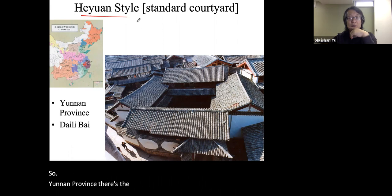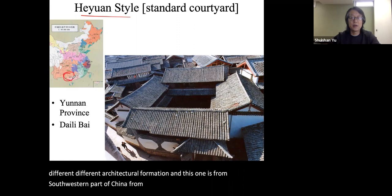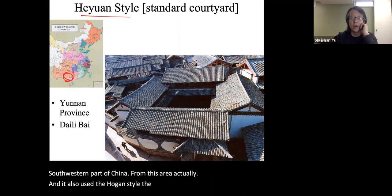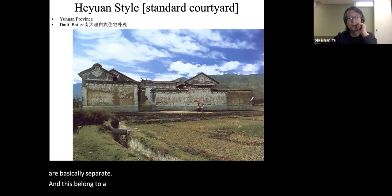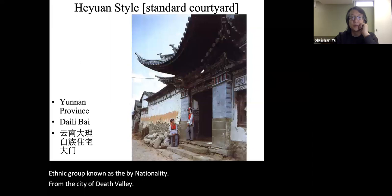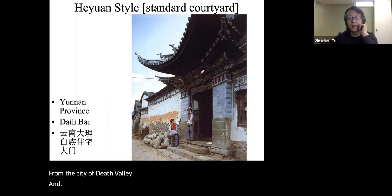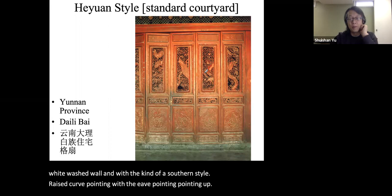In Yunnan province, the same courtyard-style house can have very different architectural formation. This example from southwestern China uses the He Yuan style where buildings are essentially separate. It belongs to an ethnic group known as the Bai nationality, from the city of Dali. The characteristic feature of Bai ethnic architecture is white — they use whitewashed walls with a southern style raised curved eave pointing upward, and wood carving for the doors.